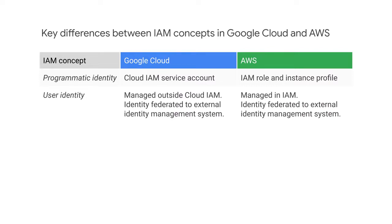For GCP, user identities are managed outside of GCP. For example, G Suite or Gmail accounts can be used to manage identities. For AWS, user and group identities are created using AWS. For EC2, instance profiles can also be used.